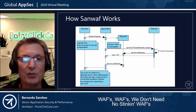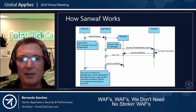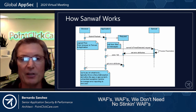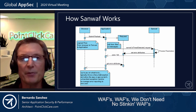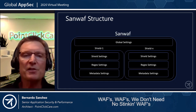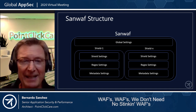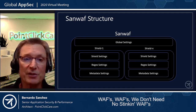It's then up to the application to get these error attributes if it's a fail. You could throw a security exception and allow an unhandled exception handler to handle it and nicely present the data to the end user. Here's the structure of SANWAF: it has global settings and things called shields. The shields themselves have shield settings, regex settings, and metadata settings.